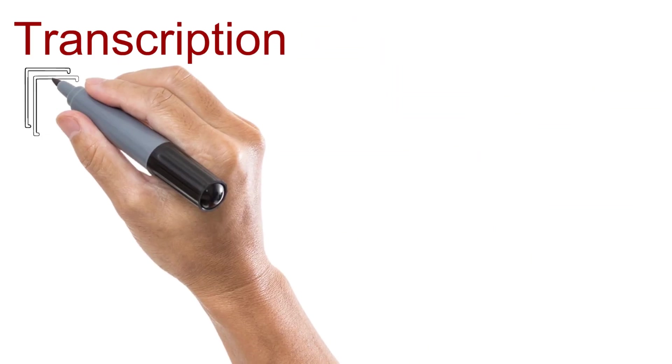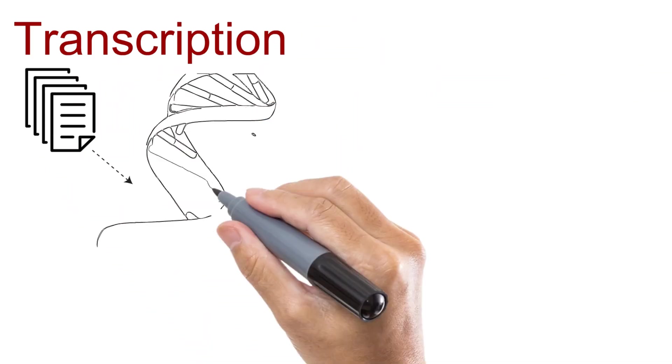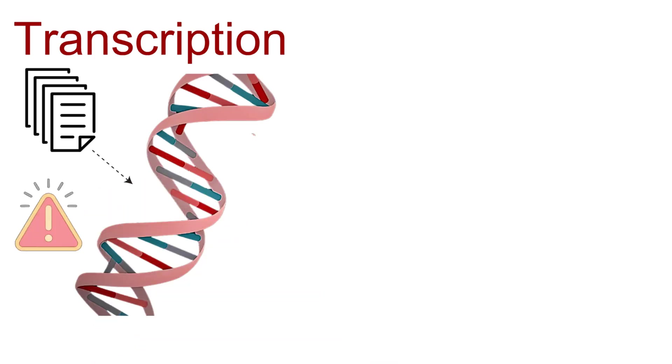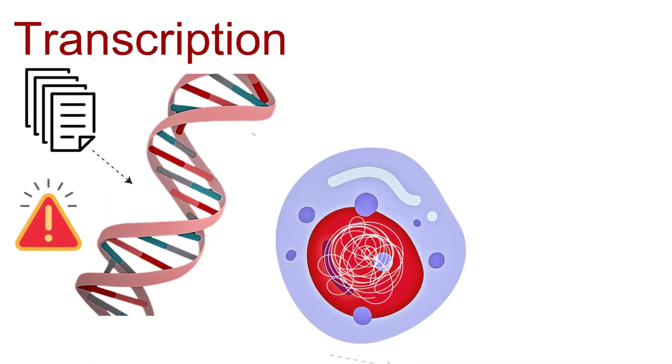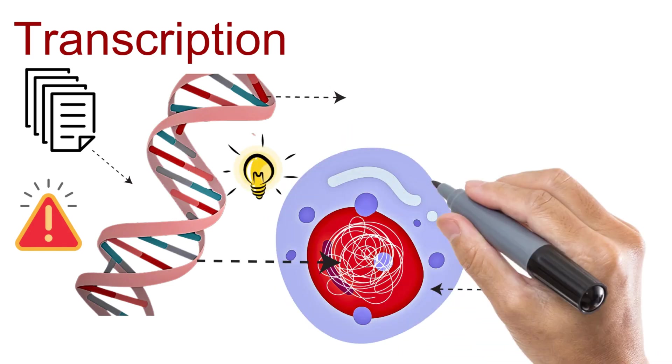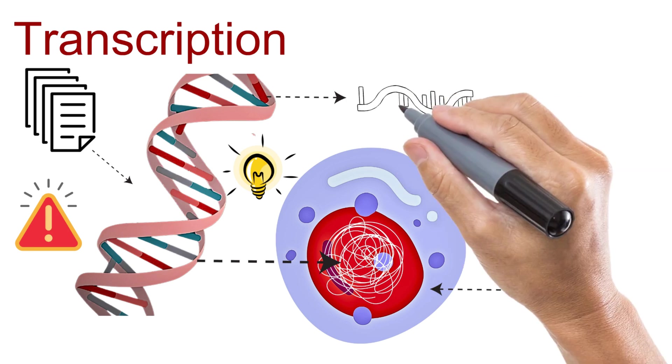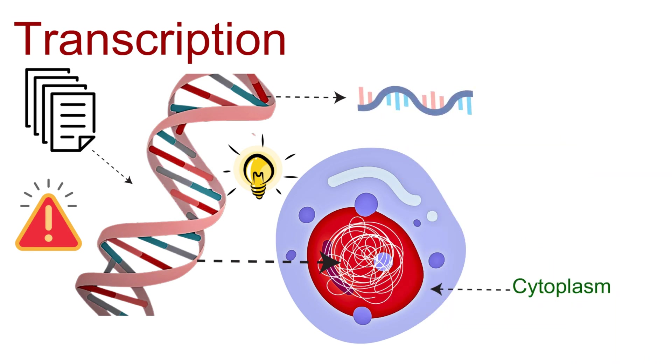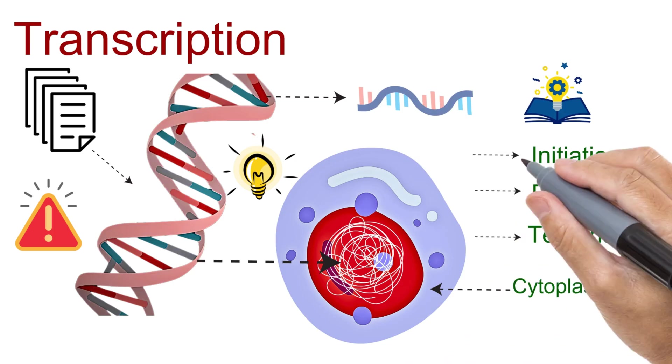Transcription is like photocopying a page from the master blueprint. But there is an issue. DNA stays safely inside the nucleus, and the cell still needs its instructions outside in the cytoplasm. To solve this, the cell makes a copy of the gene it needs, not the whole DNA, just the relevant section. Let's understand this process in three main steps: initiation, elongation, and termination. Our first step is initiation.